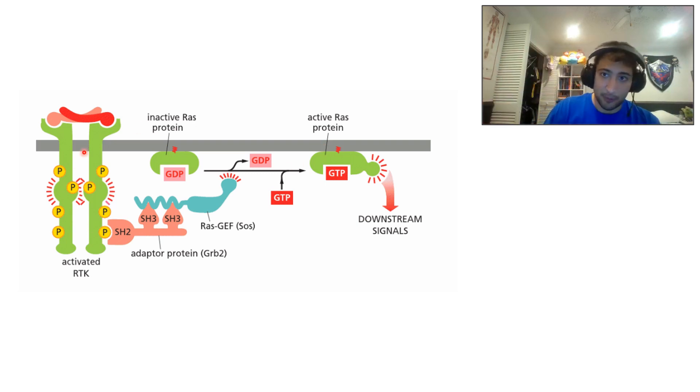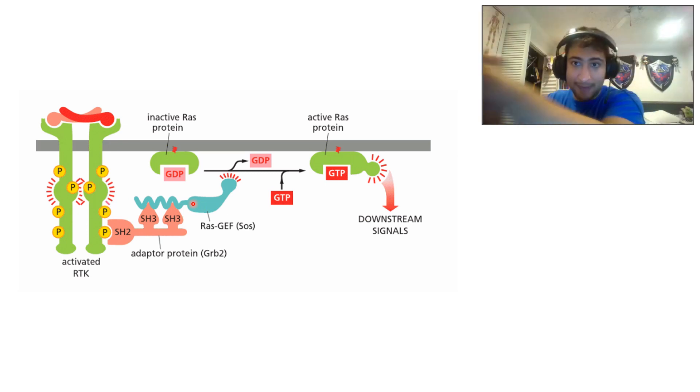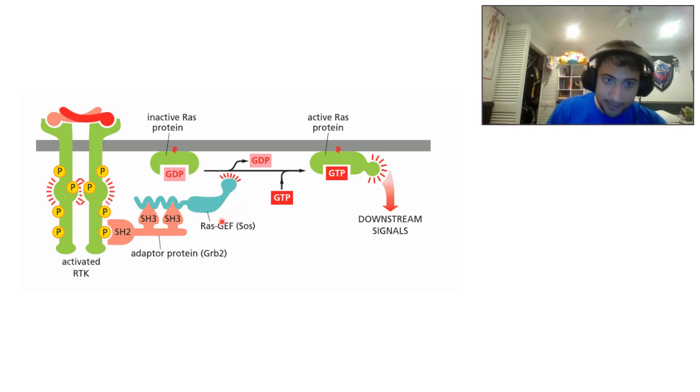And that leads to the downstream signaling cascade. So to repeat, receptor tyrosine kinase is activated, it recruits a GRAB protein, it grabs the exchange factor. The exchange factor will swap GDP for GTP, and that's what activates RAS.